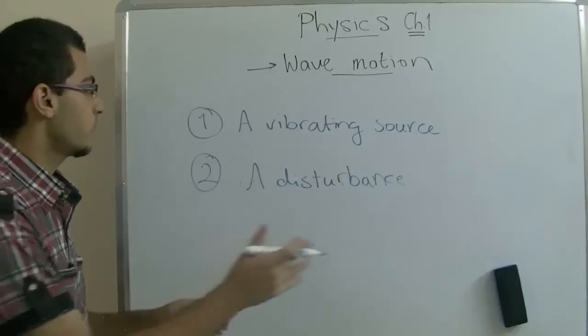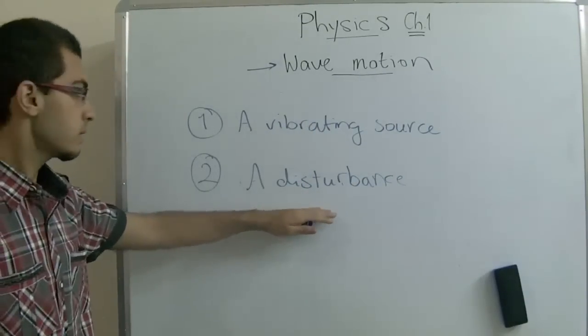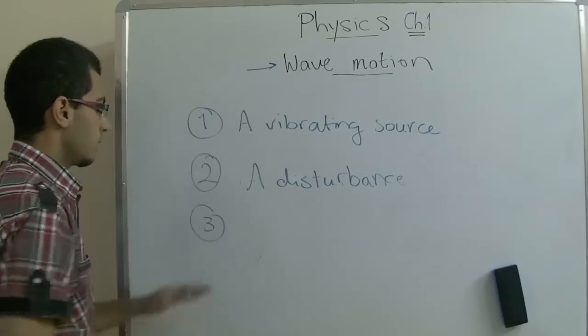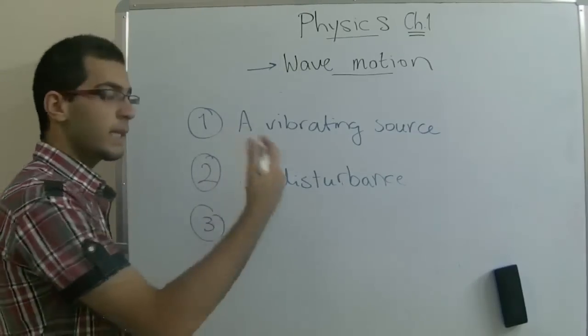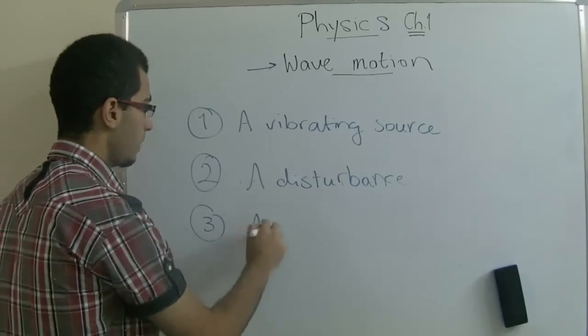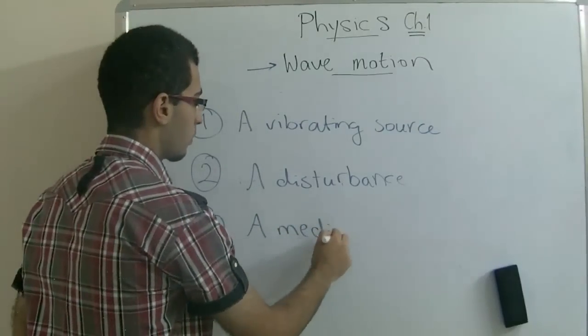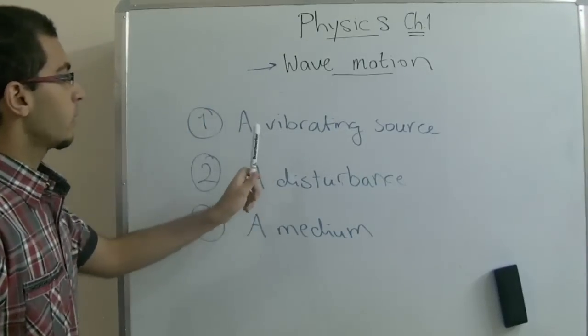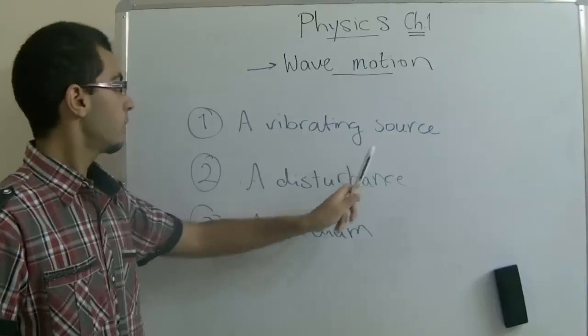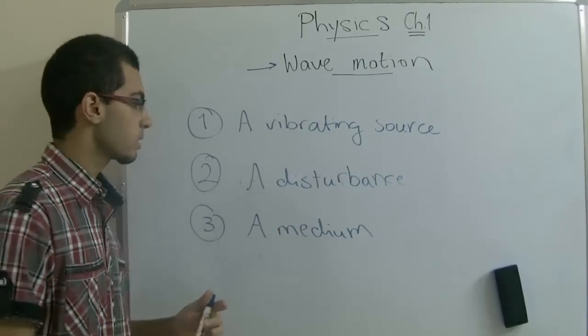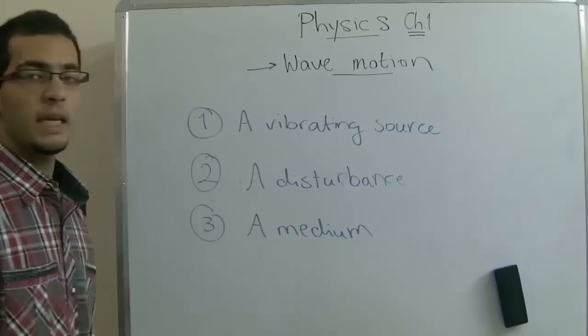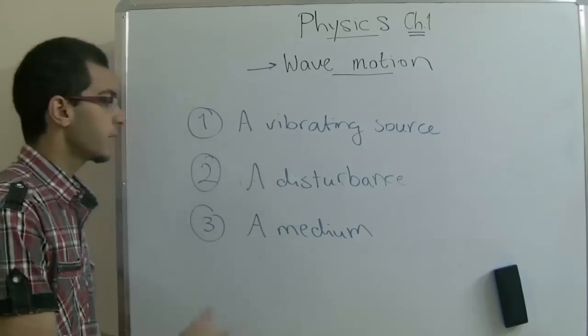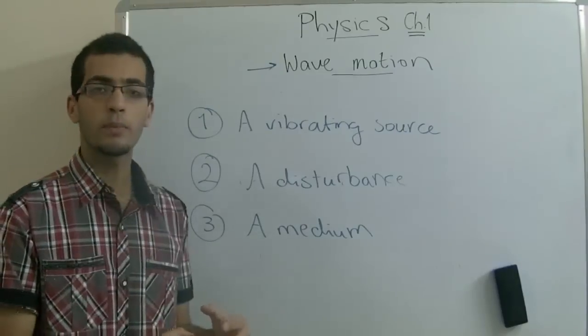This is the second requirement. The vibrating source produces vibrations. These vibrations make a disturbance. This disturbance is transmitted or it moves through a medium, which is water. In this example, the vibrating source is the pebble, the disturbance is the concentric circles, and the medium is water. These are the three requirements that a mechanical wave needs to be produced properly.